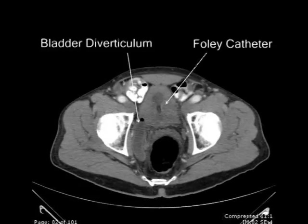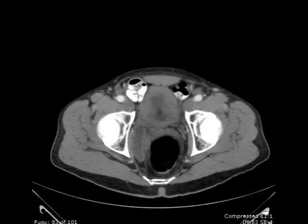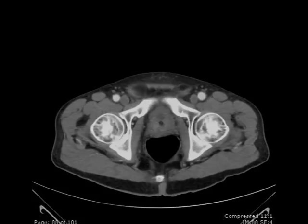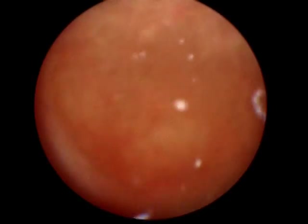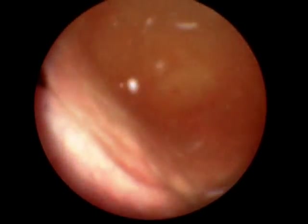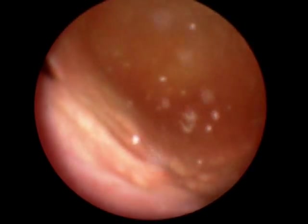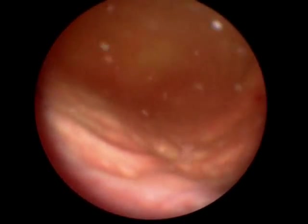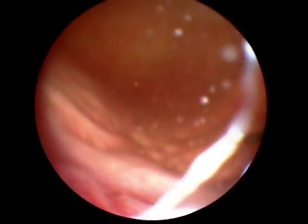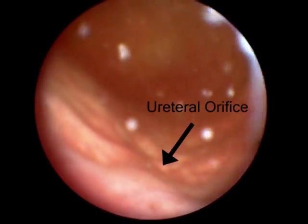Even with urethral catheter drainage, the bladder diverticulum remains distended with urine. A cystoscopy was performed and the neck of the bladder diverticulum was identified. Its proximity to the right ureteral orifice is noted.